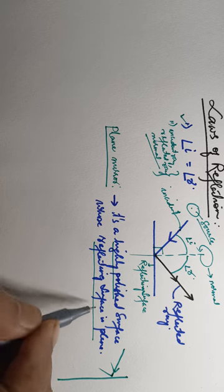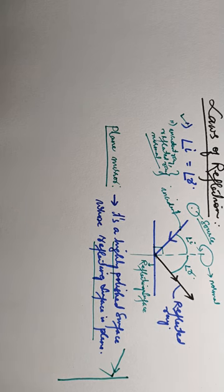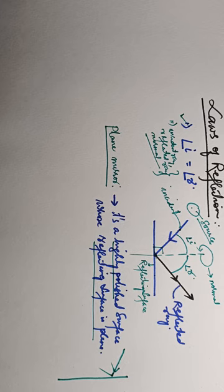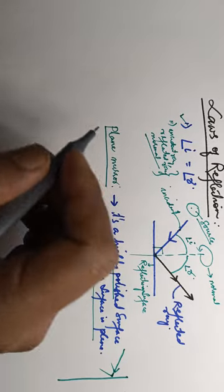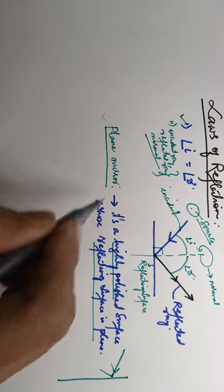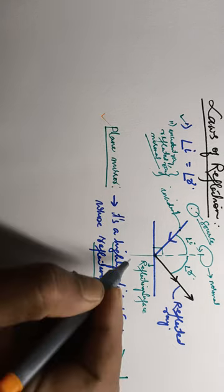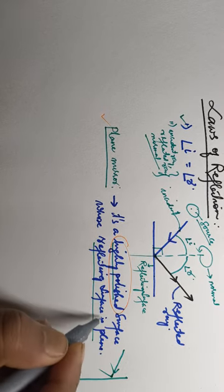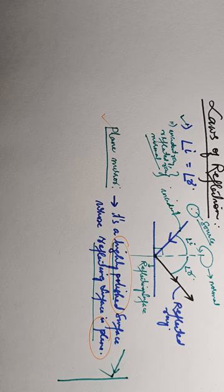We are discussing plane mirrors because there are different types of mirrors, which we will gradually discuss as we proceed further in the chapter. For now, the definition: a plane mirror is a highly polished surface whose reflecting surface is plane.